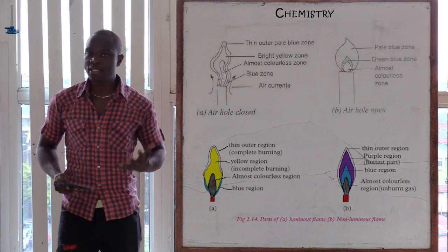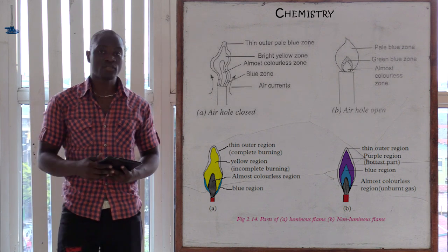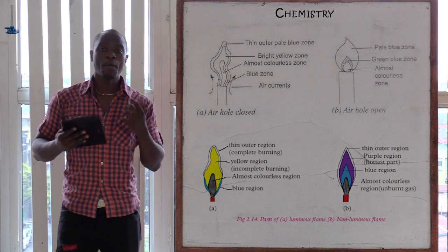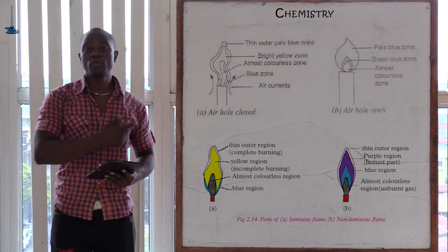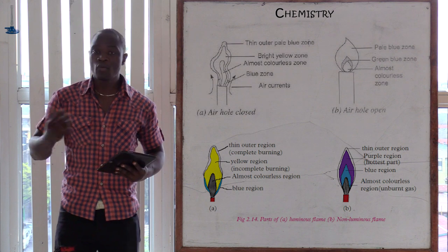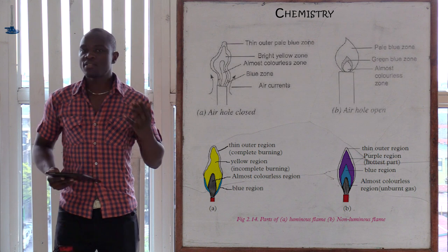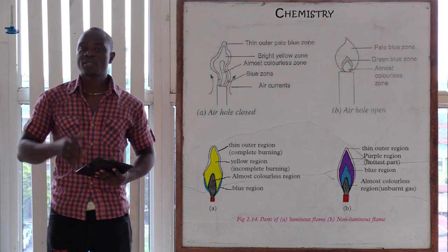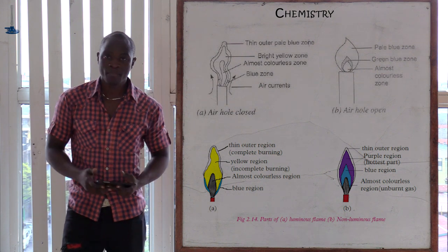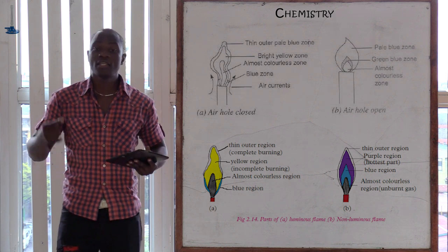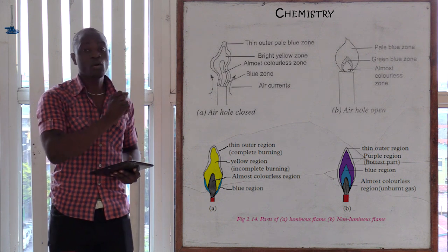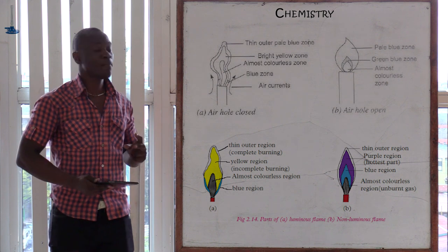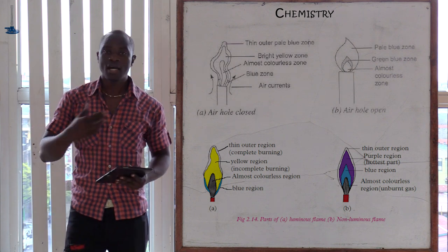In the Bunsen burner, we have two types of flames. The first type is always the non-luminous flame, and the color of the non-luminous flame is always blue. The other type is the luminous flame, and the luminous flame is always yellow. The Bunsen burner produces the non-luminous flame when the air hole is fully open. But when the air hole is tightly closed, meaning there is no air flowing inside to complete combustion, it will produce the luminous flame because of incomplete combustion.